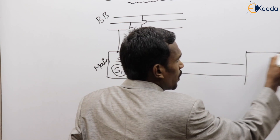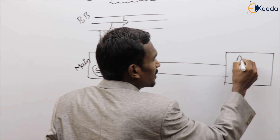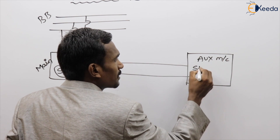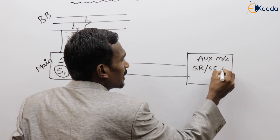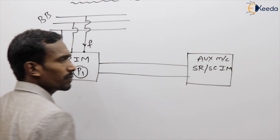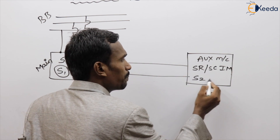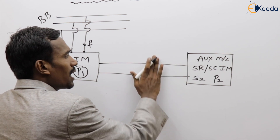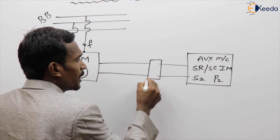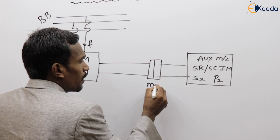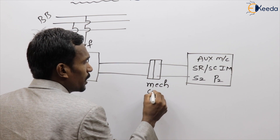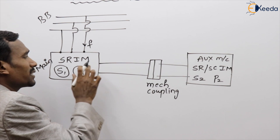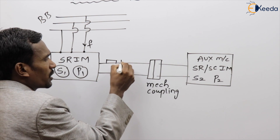This main machine is coupled to another machine called the auxiliary machine — a baby slip ring or squirrel cage induction machine — with slip S2 and number of poles P2. These two machines are mechanically coupled to each other.